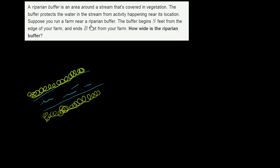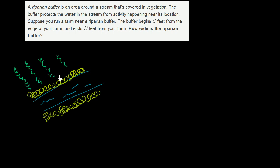Suppose you run a farm near a riparian buffer. The buffer begins s feet from the edge of your farm and ends b feet from the edge of your farm. How wide is the riparian buffer? So this right over here could be my farm — those are my crops. And they're saying the buffer begins s feet from the edge of your farm, so let's say that this right over here is the edge of my farm.